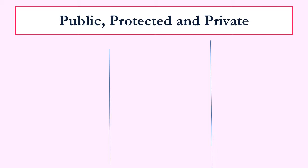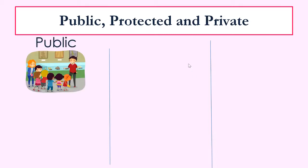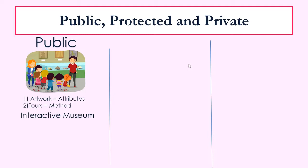I want us to stop thinking of an object as an abstract idea and start thinking of it as a museum. Here we have three different types of museums. The first museum is a public museum. The attributes are going to be the artwork, and the methods are the tours. In this first museum, the children are going to be able to go anywhere they want, touch the artwork, and alter the artwork.